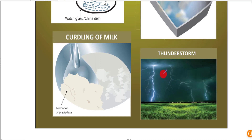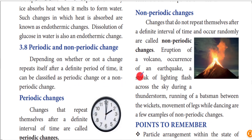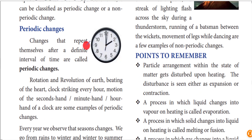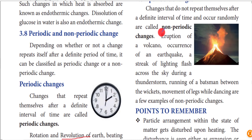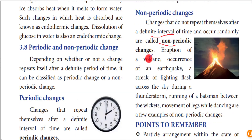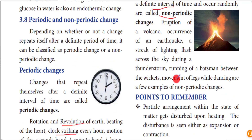Periodic change examples: revolution of the Earth, breathing, a clock striking - the minute hand and second hand move at a regular time interval. Non-periodic change: we cannot predict a definite time interval - it occurs randomly. Examples of non-periodic change include volcano eruptions and lightning. This lesson covers physical change and chemical change, and we give time duration consideration to various reactions from sudden to long-term.